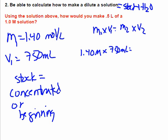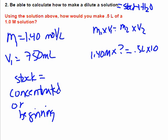And then M2, I don't know. Oh actually, let me try this again. M1 times V1, I know that I have the 1.4 molar solution. I don't know how much of that to use to make 0.5 liters of a 1 molar solution.